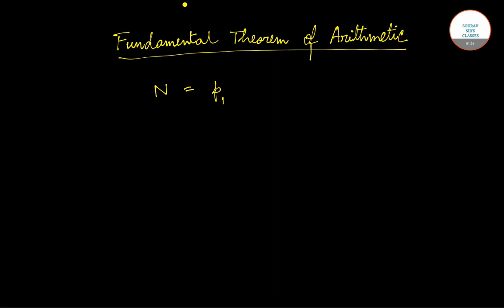Let p1 be one prime number, so it could be p1 to the power e1. Let p2 be another prime number — p2 to the power e2. Let p3 be another prime number — p3 to the power e3. So we can express any positive integer in the form of a product of prime numbers, continuing up to pn to the power en.